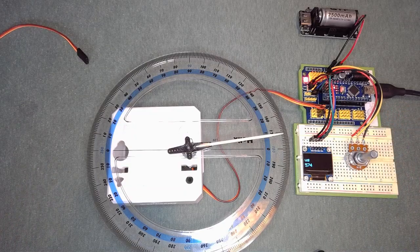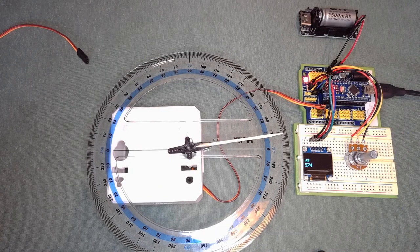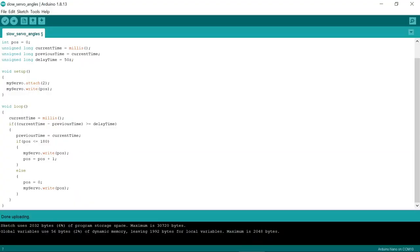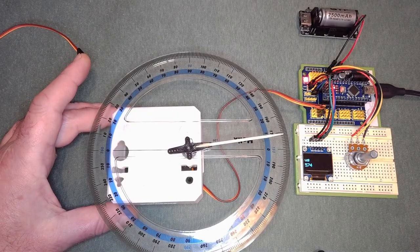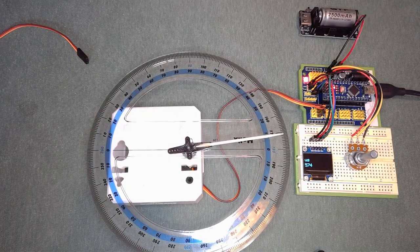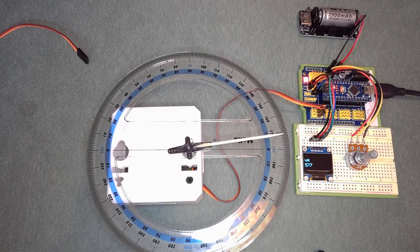So the first sweep program I wrote was this one, a slow sweep using angles. This is non-blocking code, so I could be putting in here, in these if statements in the loop, other code for the nano which could run. I'll upload this and turn the camera back on.